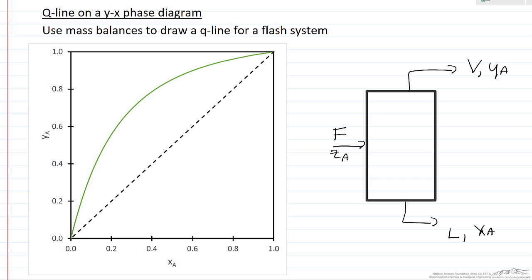So XA and YA, those two phases, those compositions are in equilibrium, or in vapor-liquid equilibrium, and so that means they're going to appear on this green line on the left, they have to be on the green line if they're in equilibrium.